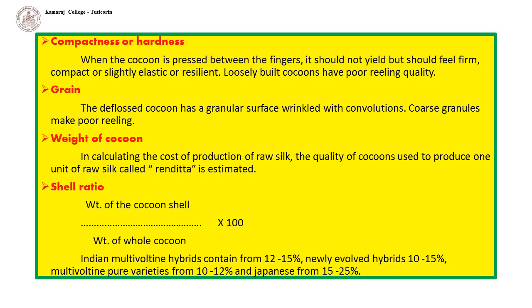Shell Ratio: Since the whole cocoon with the pupa inside is purchased, it is essential to know the ratio between the weight of the silk shell and the whole weight of the cocoon. This is expressed as: (weight of cocoon shell / weight of whole cocoon) × 100. Indian multivoltine hybrids contain 12 to 15%, newly evolved hybrids 10 to 15%, multivoltine pure varieties 10 to 12%, and Japanese breeds 15 to 25%.